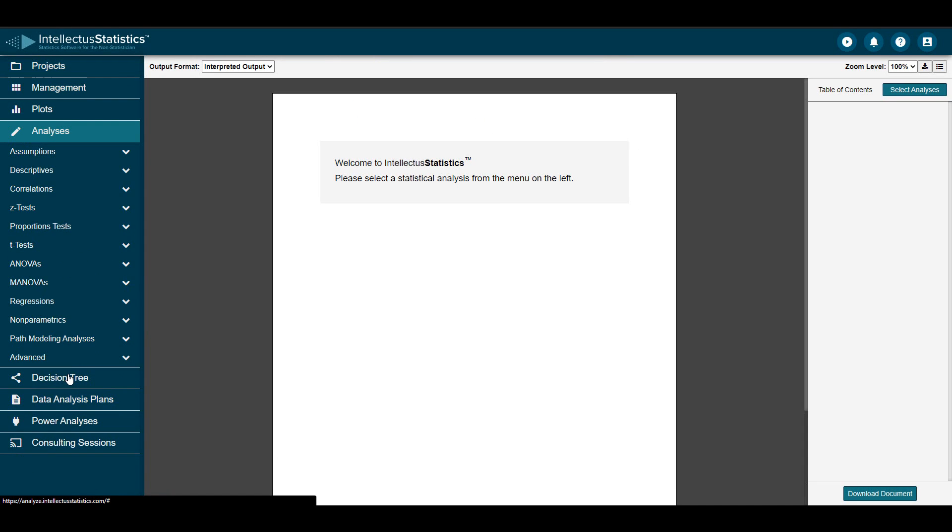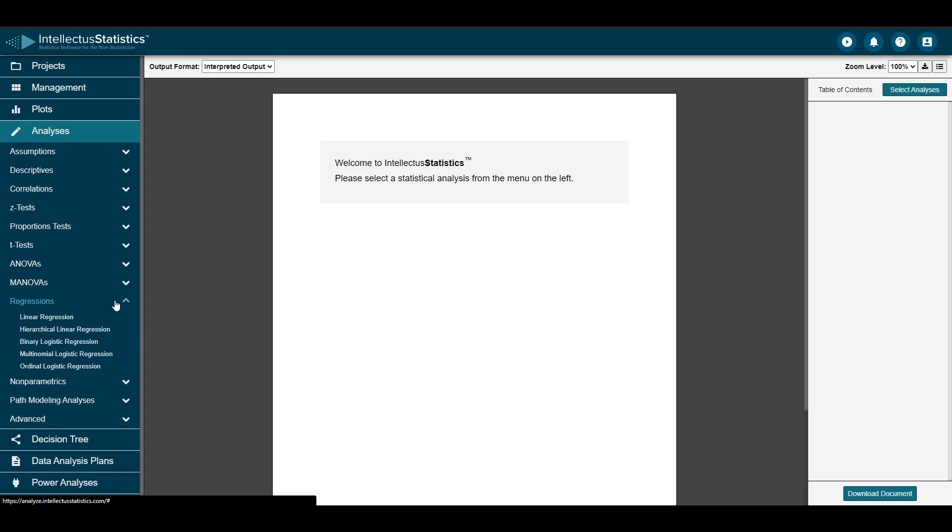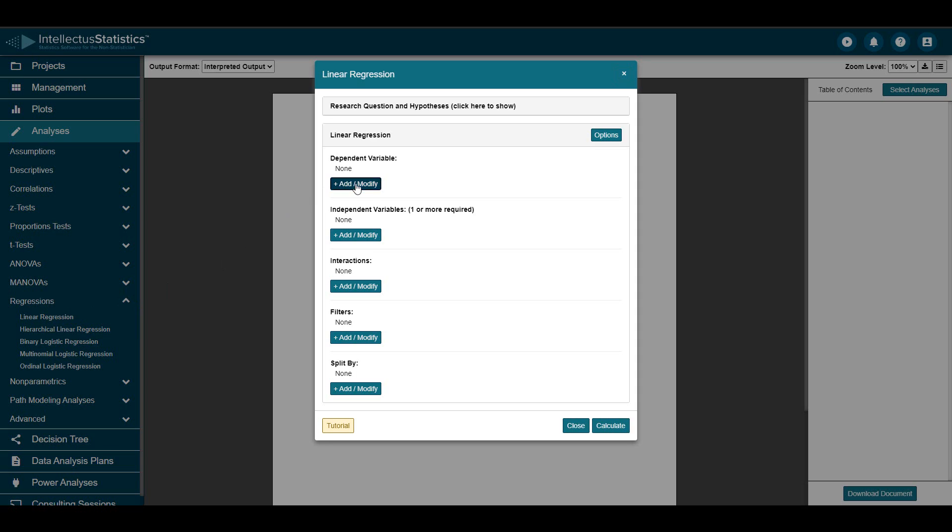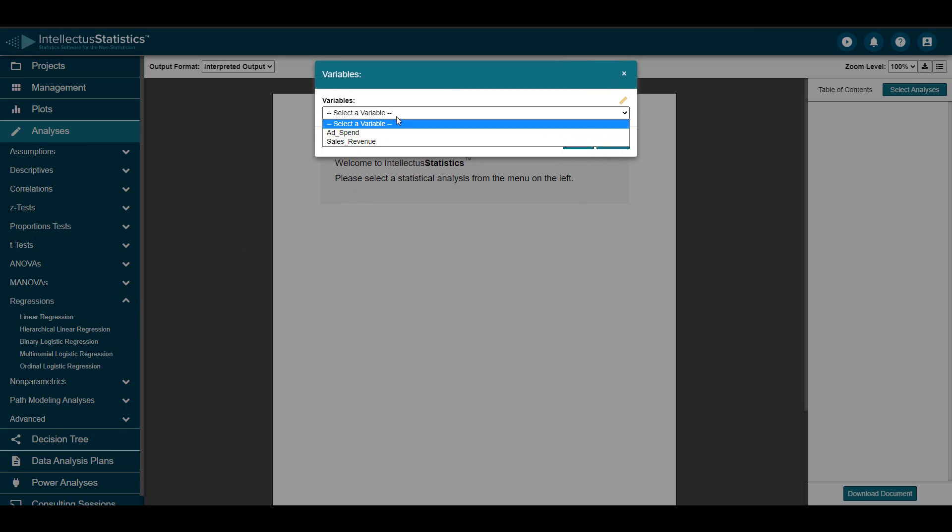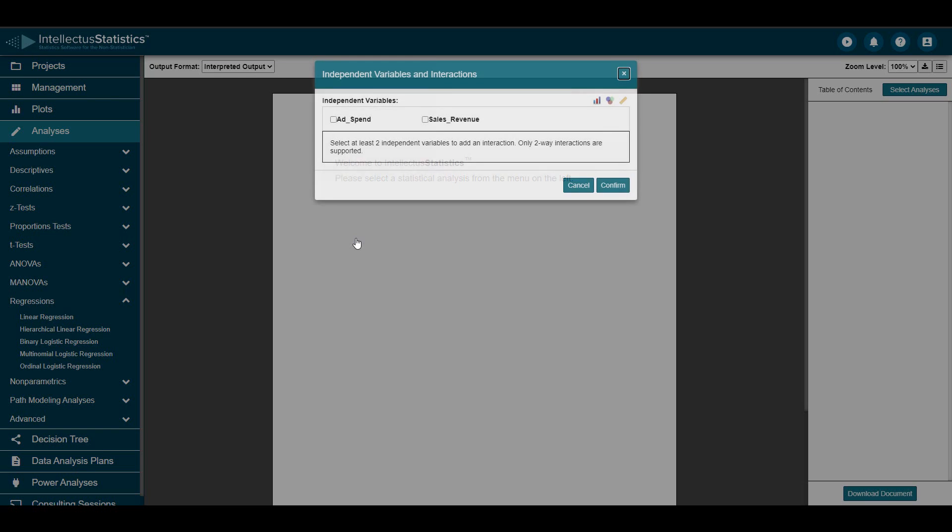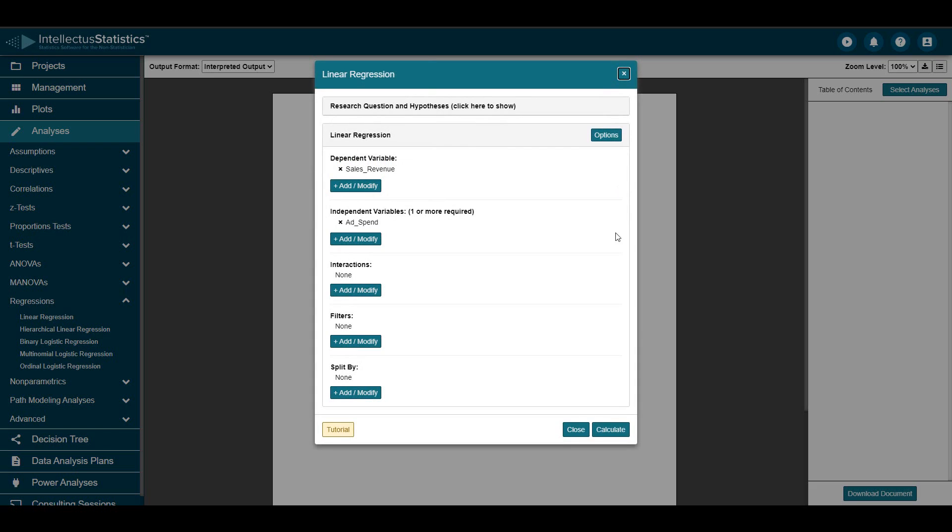To conduct a regression, expand the Regressions menu, then click Linear Regression. Select your dependent variable, for us that's Sales Revenue. Then select your independent variable, which is Add Spend. Then click Calculate.